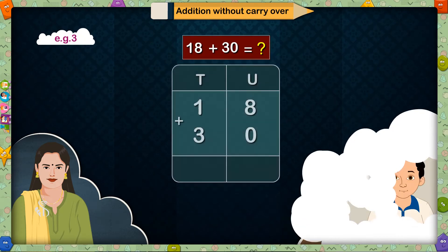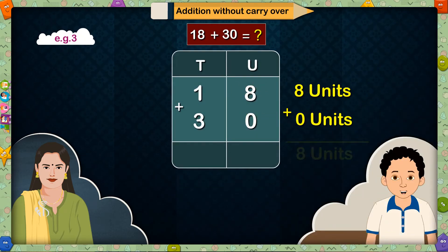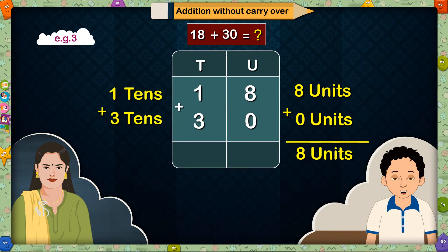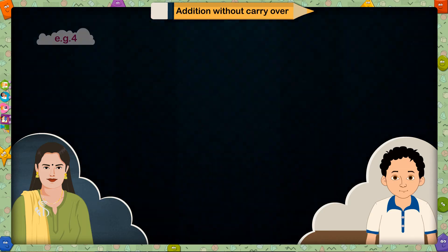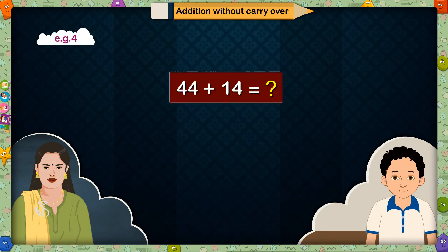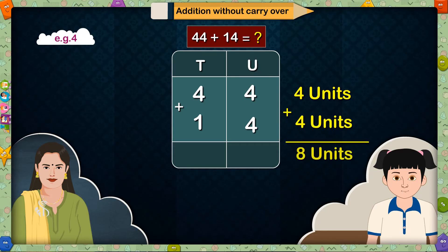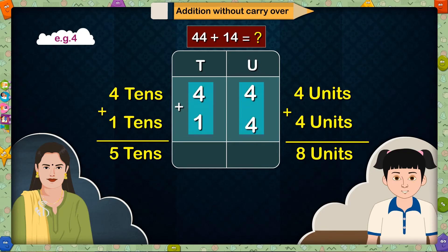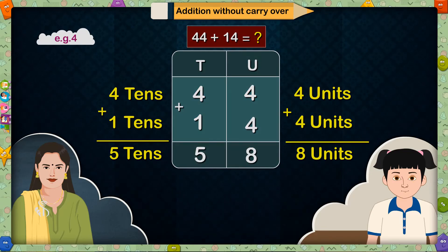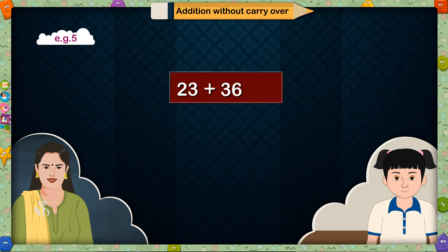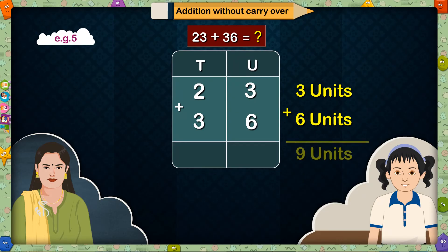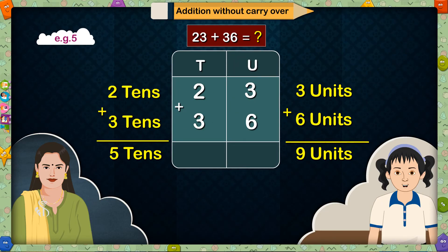18 plus 30 is equal to? 8 plus 0 is equal to 8 units, and 1 plus 3 is equal to 4 tens. So 18 plus 30 is equal to 48. Correct. 44 plus 14 is equal to? 4 plus 4 is equal to 8 units, and 4 plus 1 is equal to 5 tens. So 44 plus 14 is equal to 58. Good. 23 plus 36 is equal to? 3 plus 6 is equal to 9 units, and 2 plus 3 is equal to 5 tens. So 23 plus 36 is equal to 59. Well done!